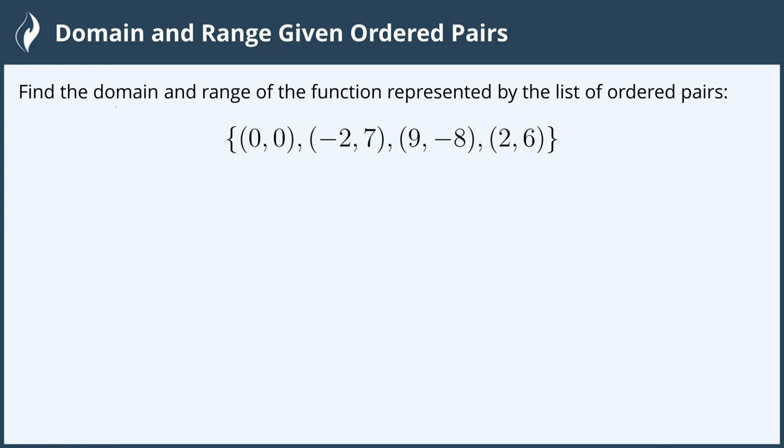The domain are all of the x values and the range is all of the y values. An ordered pair is an ordered pair of x and y values.